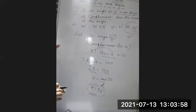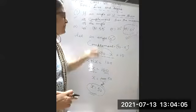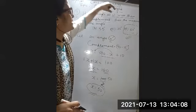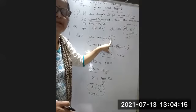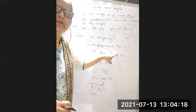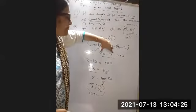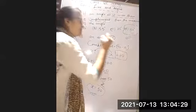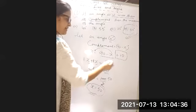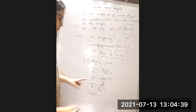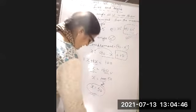Let me explain this question again. One angle was 10 degrees more than its complement. We let angle = X, complement = 90 − X. Since X = (90 − X) + 10: X + X = 90 + 10, 2X = 100, X = 50. So option D, 50 degrees, is correct.